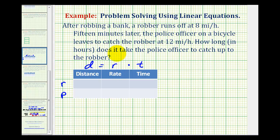So let's start with the rate. The rate of the robber is 8 miles per hour, so this is 8, and this column is in miles per hour. And the police officer on his bicycle is traveling at 12 miles per hour.